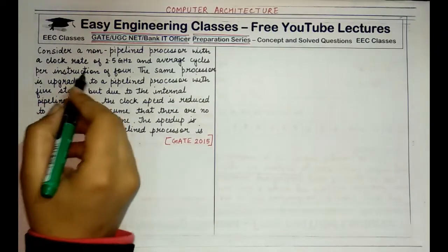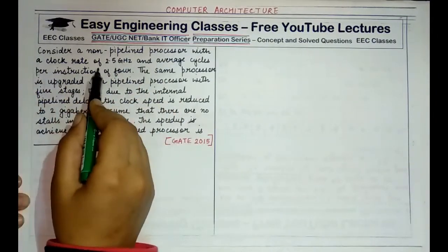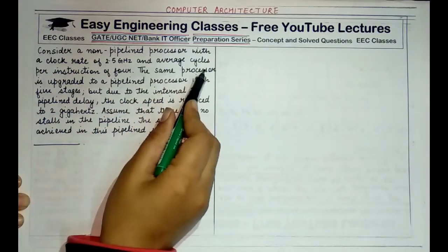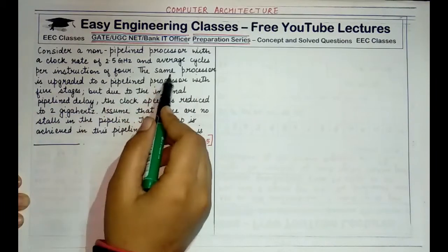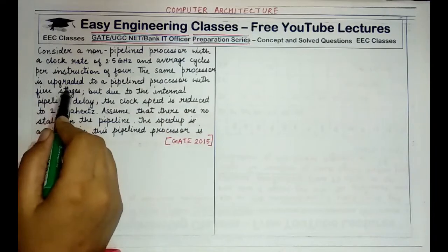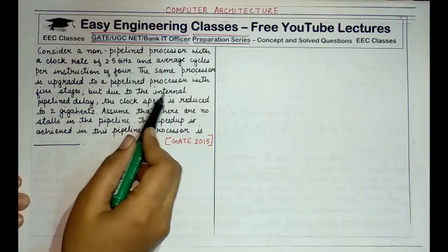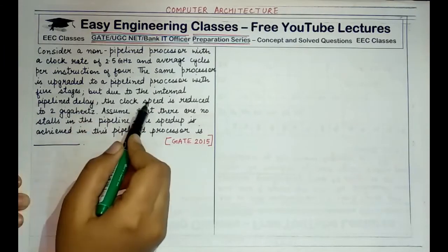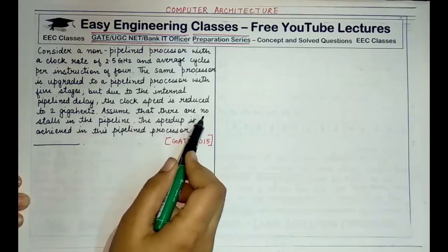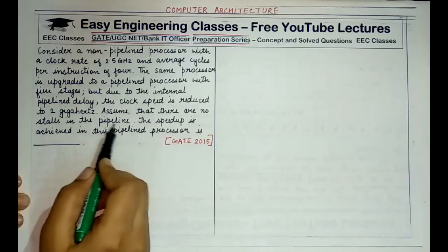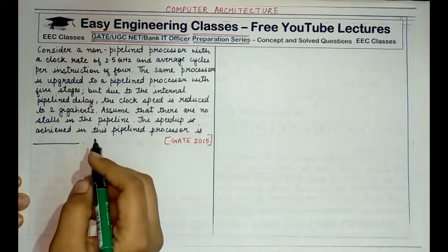So the question says, consider a non-pipelined processor with a clock rate of 2.5 GHz and average cycles per instruction of 4. The same processor is upgraded to a pipeline processor with 5 stages but due to the internal pipeline delay, the clock speed is reduced to 2 GHz. Assume that there are no stalls in the pipeline. The speed up achieved in this pipeline processor is.